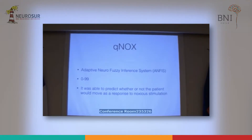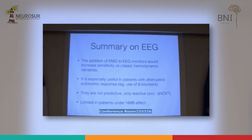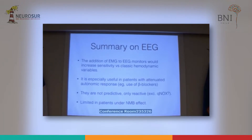As an anesthesiologist, you don't want only to know that your patient is in pain — you want to know that your level of analgesia is good enough that they won't suffer pain in the future, that it's safe for the surgeon to operate and the patient won't feel pain. So we would like to predict more than detect pain. As a summary, the addition of EMG to EEG monitors increases sensitivity versus standard practice. It's especially useful in patients with attenuated autonomic response. They are not predictive, only reactive — maybe QNOX is an exception. And it's limited in patients under neuromuscular blockade, which is a large population under general anesthesia.